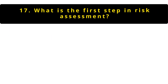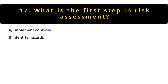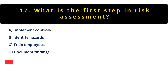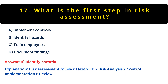Question 17: What's the first step in risk assessment? Option A: Implement controls. Option B: Identify hazards. Option C: Train employees. Option D: Document findings. The answer is B — identify hazards. You can't protect against what you don't know about. A proper risk assessment always starts with thorough hazard identification before moving on to analysis and control measures.